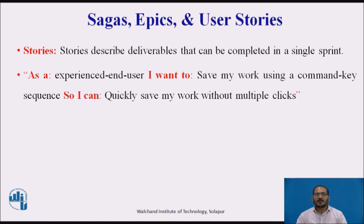User stories are the most granular description of functionality. Stories describe deliverables that can be completed in a single sprint. An example is: as an experienced end user, I want to save my work using a command key sequence so I can quickly save my work without multiple clicks. It's important to note that the product owner and development team must refine the stories so they are actionable. In many cases, sagas, epics, and stories provided by the customer must be decomposed into more discrete and therefore actionable units of work.